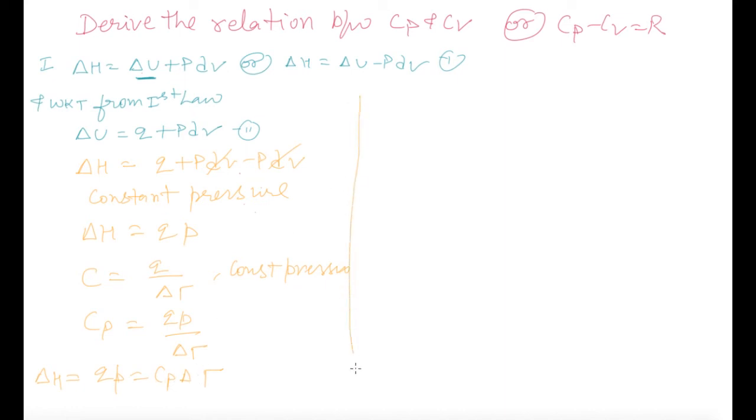In the same way, we can understand Cv also. You know very well that C is equal to Q by delta T and whenever it will come at constant volume, we can derive the relation Qv is equal to Cv delta T. And we know that delta U is equal to Q plus PdV and now we are doing work at constant volume.